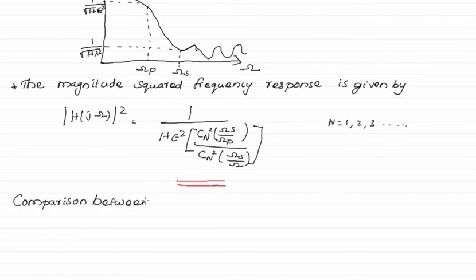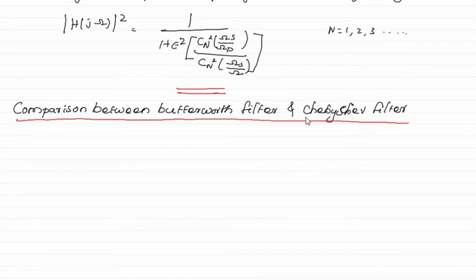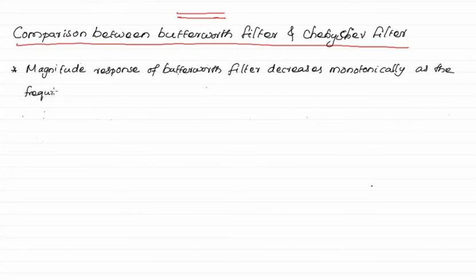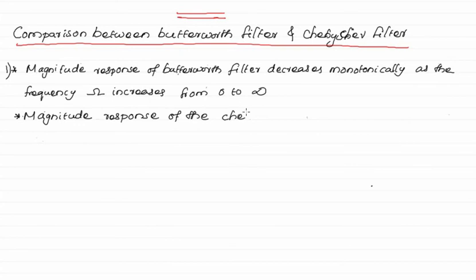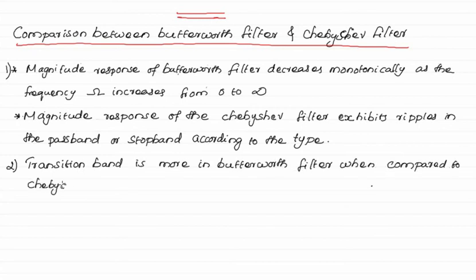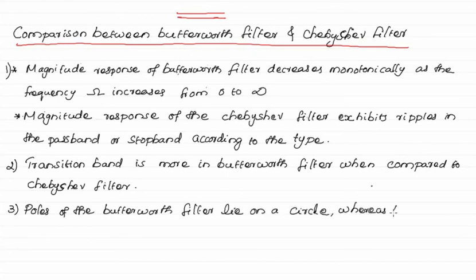The magnitude response of the Butterworth filter decreases monotonically as the frequency increases from 0 to infinity, whereas the Chebyshev filter exhibits ripples in the passband or stopband depending on the type. The transition band is wider in the Butterworth filter compared to the Chebyshev filter. The poles of the Butterworth filter lie on a circle, whereas the poles of the Chebyshev filter lie on an ellipse.